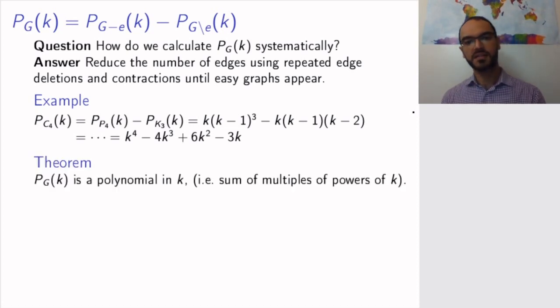So the fact that this is a polynomial is a general fact. So for any graph G, P_G(k) is a polynomial in k, meaning that it is a sum of multiples of powers of k. So here the multiples were 1, negative 4, positive 6, negative 3, and the powers were 4, 3, 2, and 1.